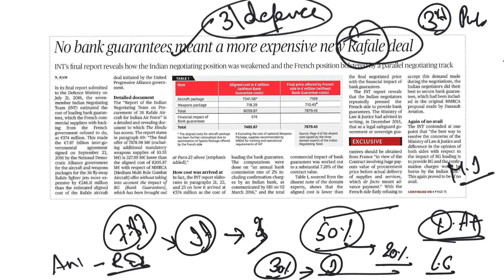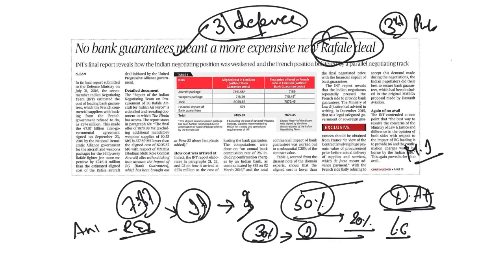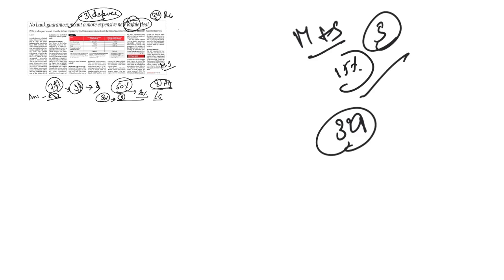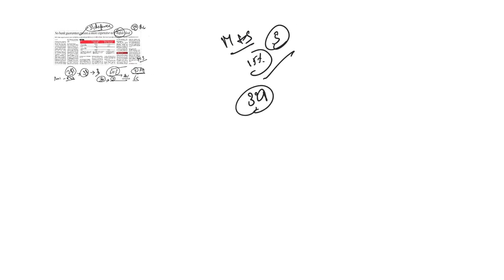In response, the bench led by Justice Ranjan Gogoi said there was no occasion to doubt the process, and that it is not the court's job to compare prices or step into such issues. As per the contract, India will get latest weapons like Meteor and SCALP missiles and a five-year support package. India will pay 15 percent advance when the deal is inked. Defense ministry sources state that Indian negotiators saved 328 million euros through negotiation.